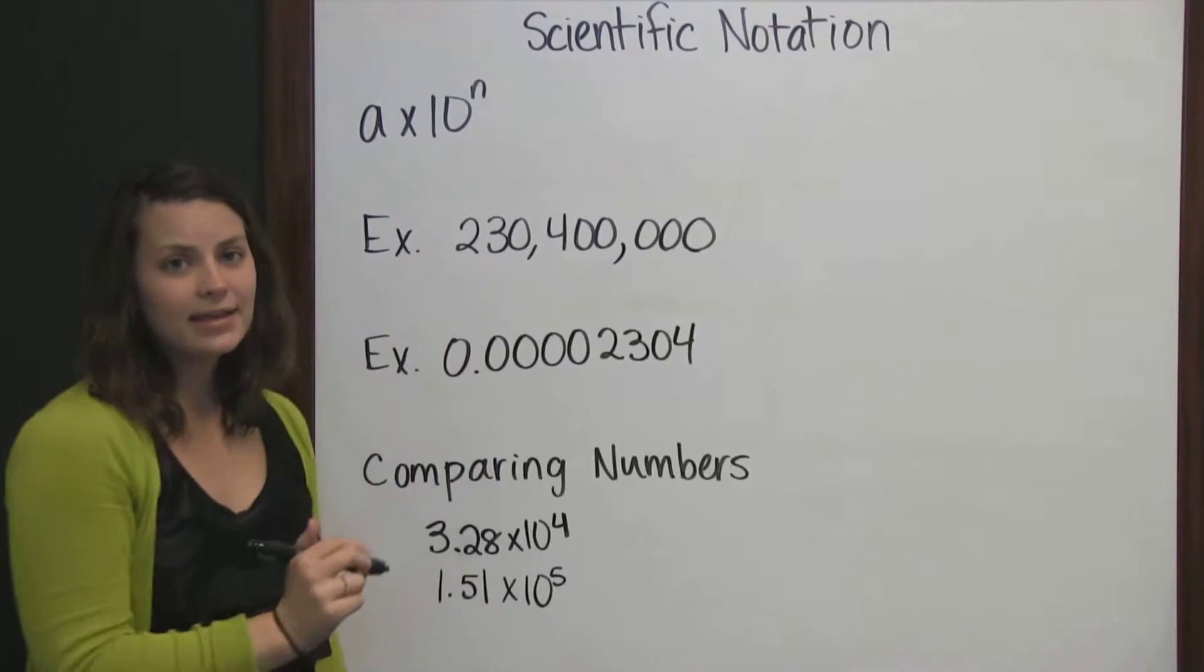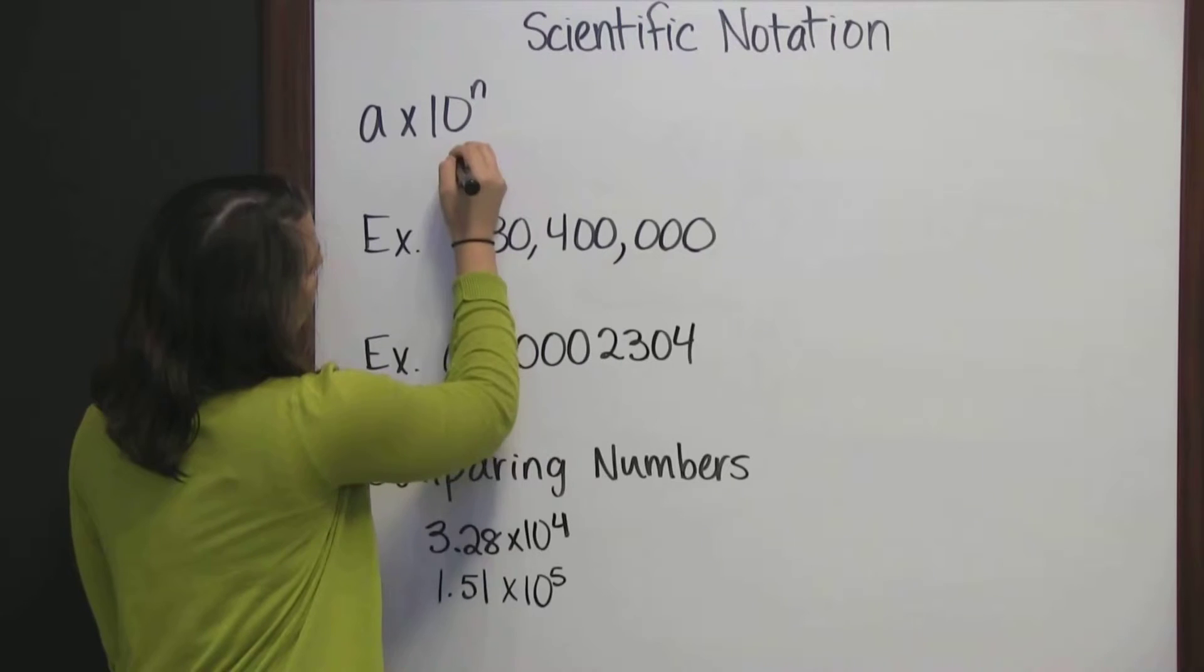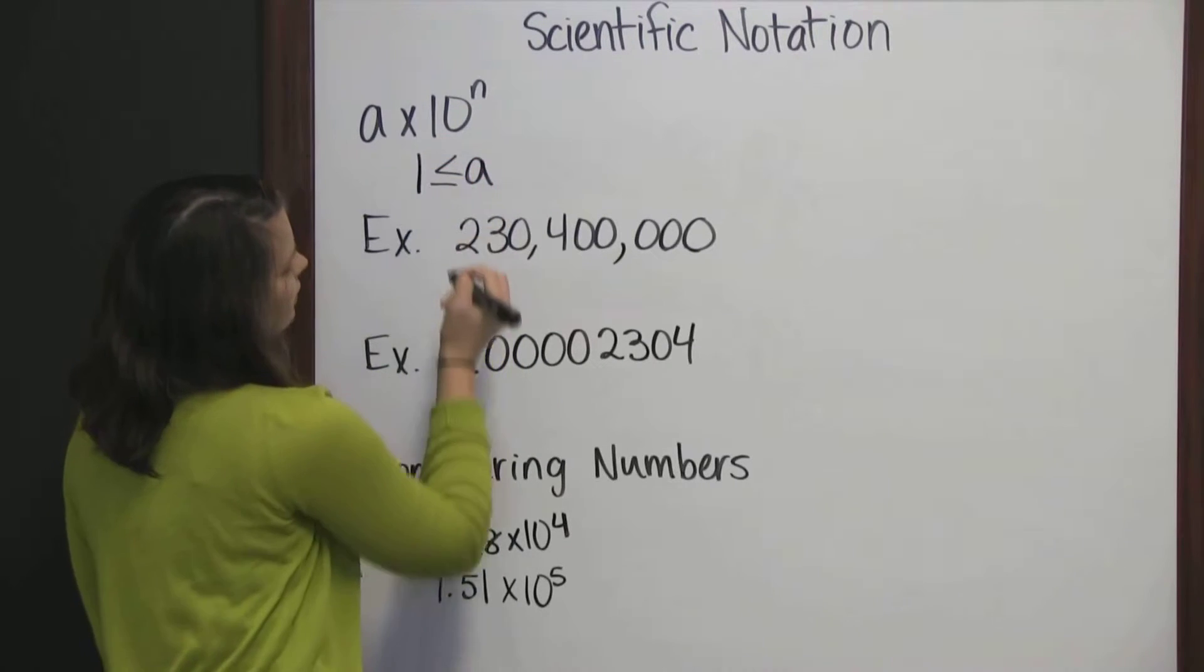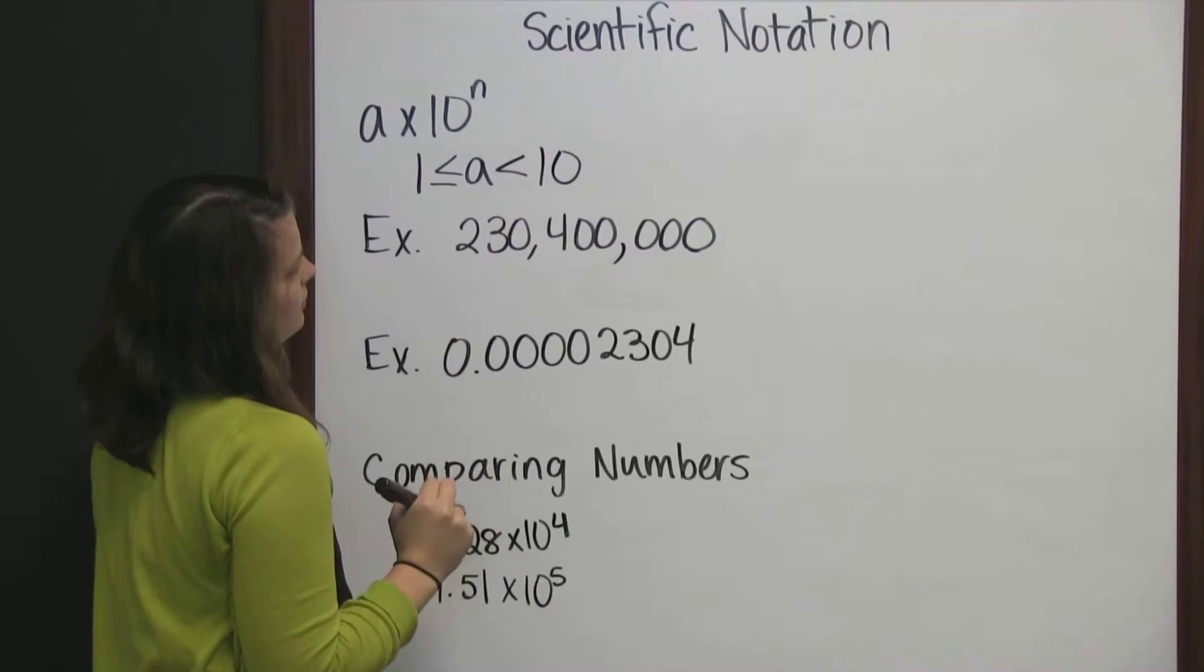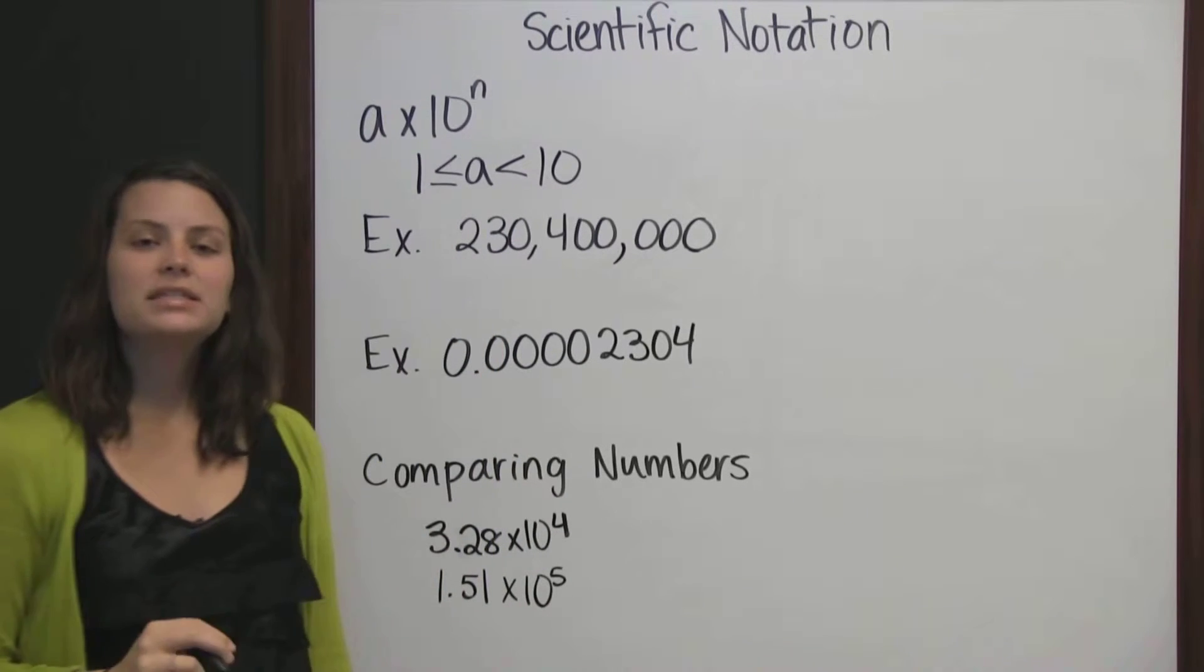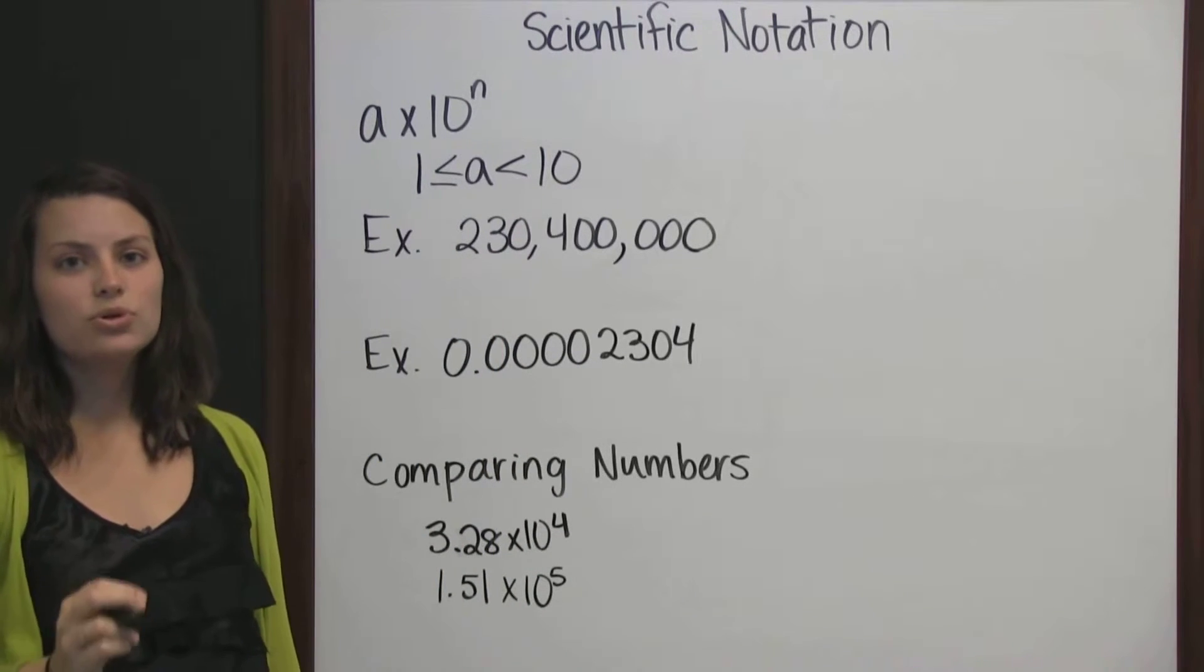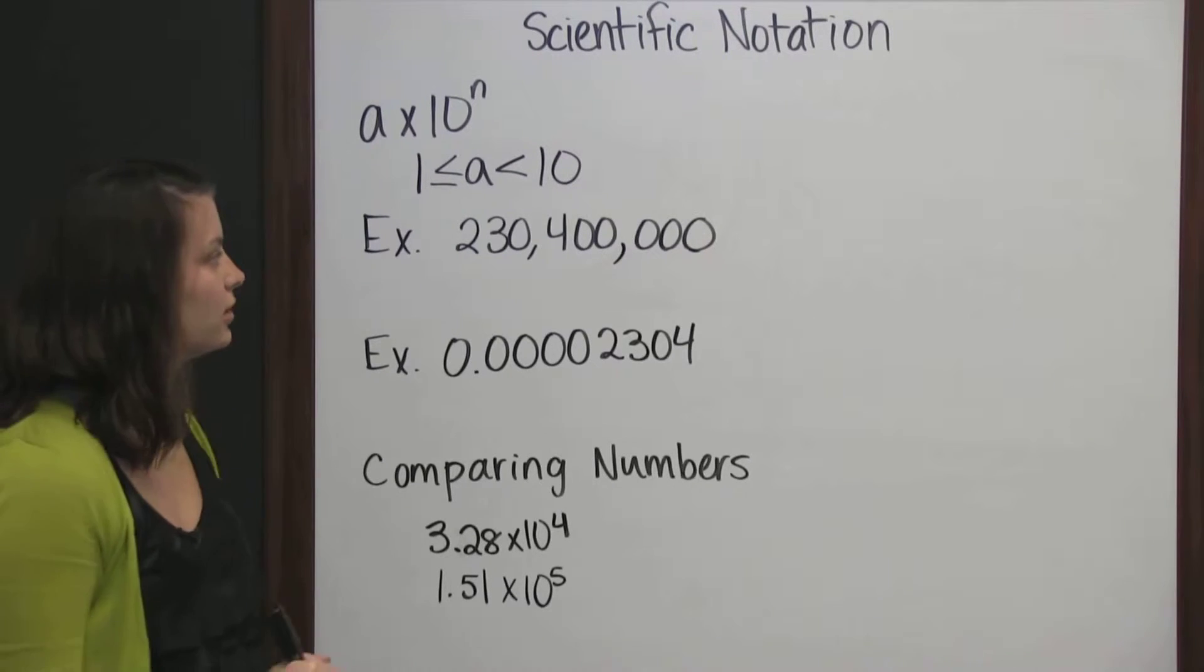where a is a number that is greater than or equal to 1, but it's less than 10. And n is the number of times we must move the decimal, and in which direction.